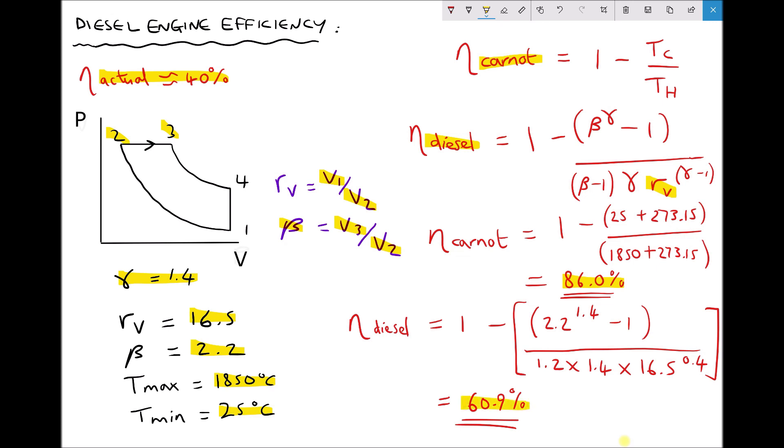We then went on to calculate our ideal diesel efficiency and we see the ideal diesel efficiency coming out at around 60.9%. Once again, that's a little higher, but that's as a result of the assumptions we make where we assume that we have adiabatic compression and expansion and we also assume that we have constant pressure heating.